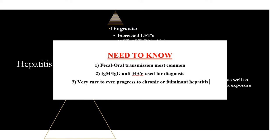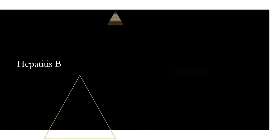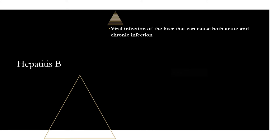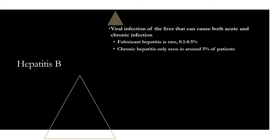The three key things to know for hepatitis A: fecal-oral transmission, diagnose with IgM or IgG anti-HAV, and it's almost never chronic. Now let's move on to hepatitis B, which is a bit more complicated. Hepatitis B can cause both acute and chronic infections — chronic in about 5% of patients. Fulminant hepatitis is pretty rare at 0.1 to 0.5%.